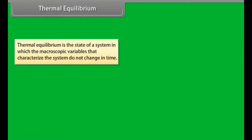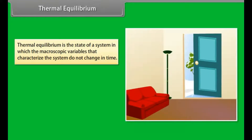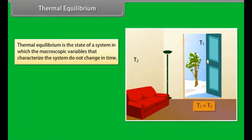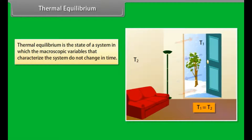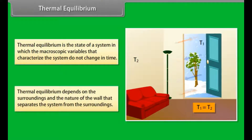Thermal equilibrium is the state of a system in which the macroscopic variables that characterize the system do not change in time. For example, in winter season, when you open the door of your house, the heat moves out. To balance the temperature, after a few minutes, you feel that the temperature inside and outside the house is the same. This is due to thermal equilibrium, which depends on the surroundings and the nature of the wall separating the system from the surroundings.